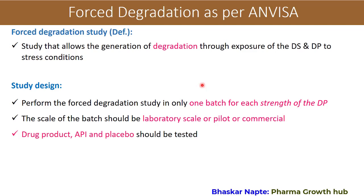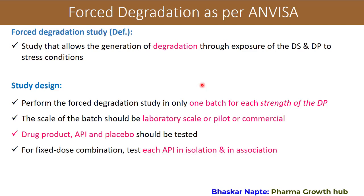The drug product, API, and placebo should all be tested, and we will discuss the analysis part in detail with examples. In case of a fixed-dose combination — a drug product containing more than one active drug substance — you need to test each API in isolation and in association. We will cover isolation versus association in the coming slides.